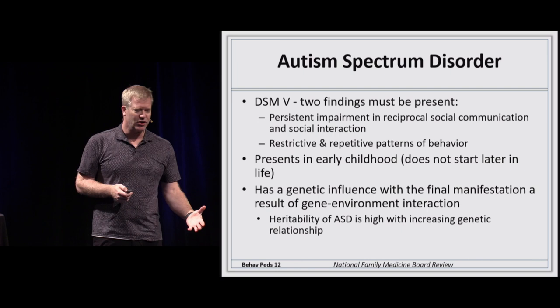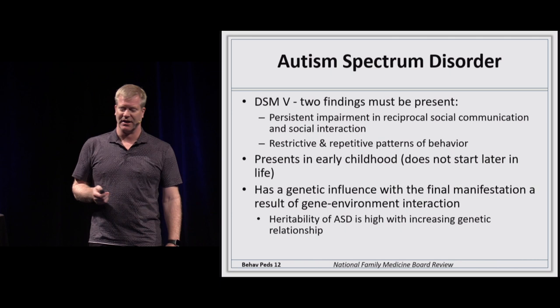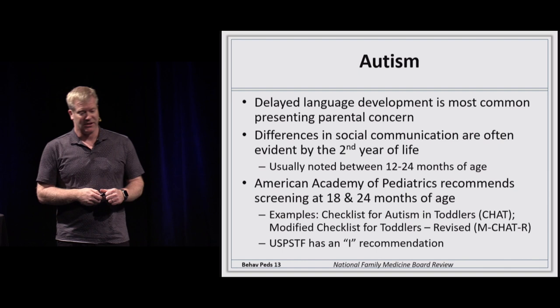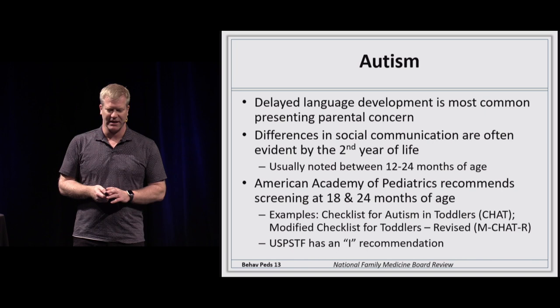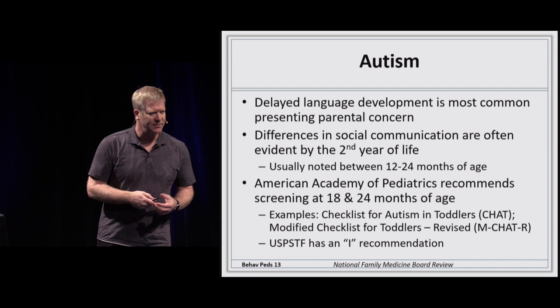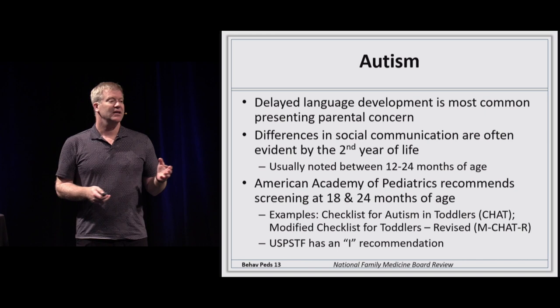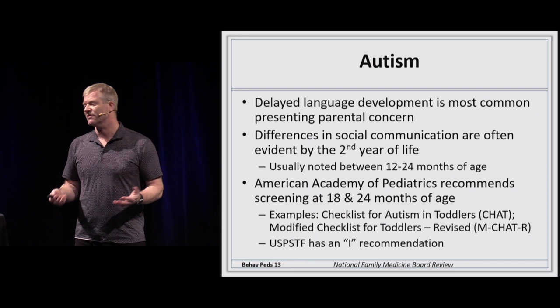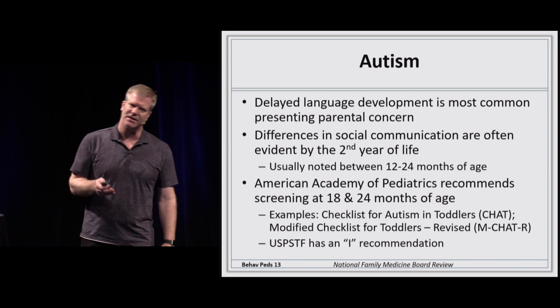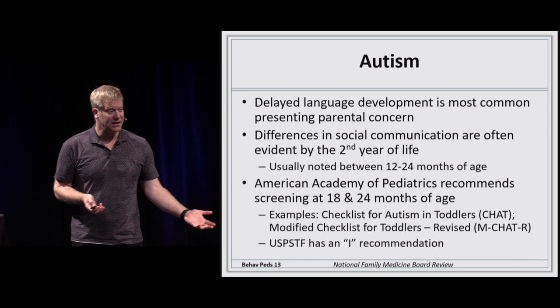Delayed language development is one of the most common presentations of ASD, usually present before the second year of life. The American Academy of Pediatrics recommends screening between 18 and 24 months. The U.S. Preventive Services Task Force gives it an 'I' recommendation due to insufficient data, whereas the AAP recommends yes to screening.